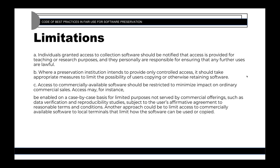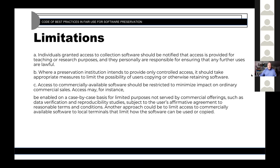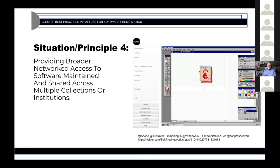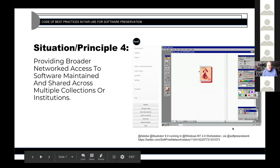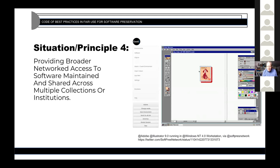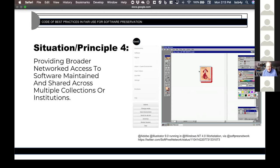That is scenario three. I'll turn it over now to Peter to describe scenario four. I thought I'd start by talking just a bit about the methodology by which this Code of Best Practices was developed. The first thing the research team did was talk to many people active in the field to find out their concerns and the recurrent situations where they found themselves rubbing up against real or perceived copyright problems.